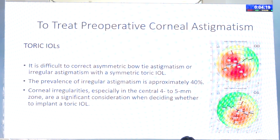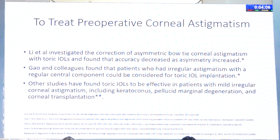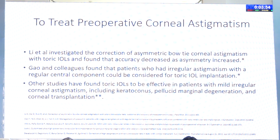For toric IOLs, it is difficult to correct asymmetric bow-tie patterns, so you need to know whether the cornea is regular or irregular. The prevalence of irregular astigmatism is approximately 40% and this can only be picked up by topography. Scientific evidence shows that if an asymmetric bow-tie is corrected with a toric IOL, the more the asymmetry, the lesser the outcome. Studies also show irregular astigmatism can be corrected with a toric IOL if the central 4.5 mm has a regular pattern — all assessed using topography.